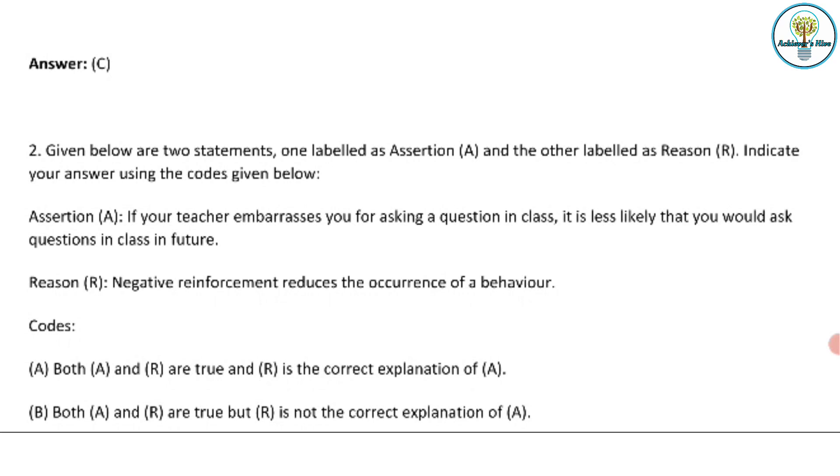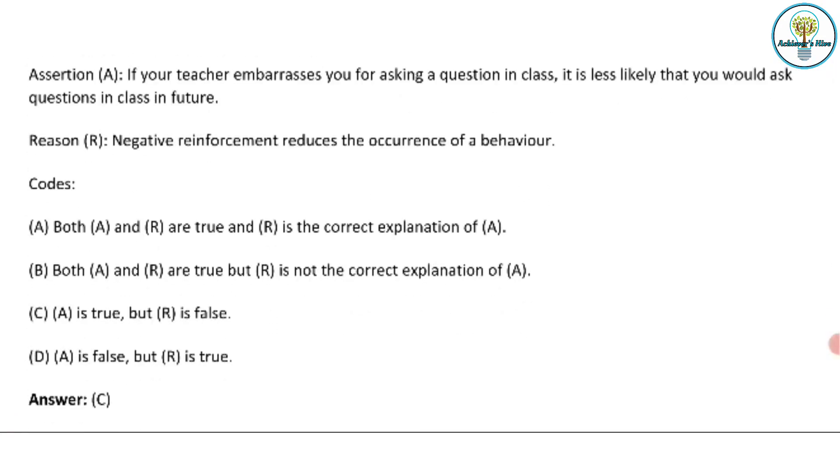So we are given assertion and reasoning. Now we have four codes. See, negative reinforcement is not responsible for reducing the occurrence of behavior. Negative reinforcement is something through which a desired outcome or a desired behavior is produced but the manner is negative. So the reason is wrong here.